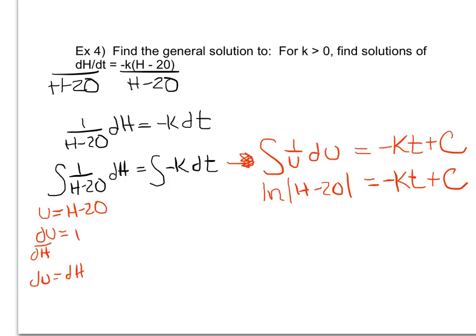Now I want to solve for h. Just like before I solved for y, I need to change this from logarithmic form to exponential form. Since the base for ln is e, I'll have e to the (negative kt plus c) equals the absolute value of h minus 20.